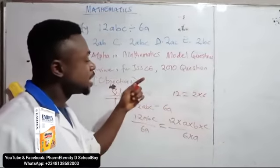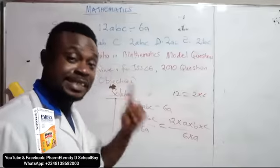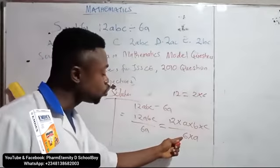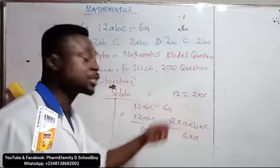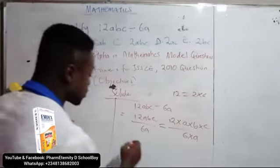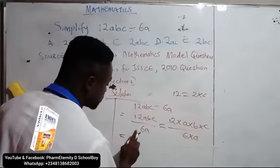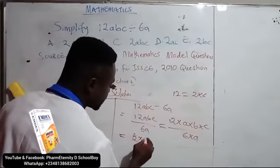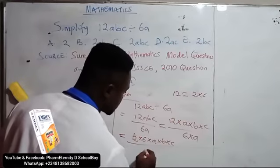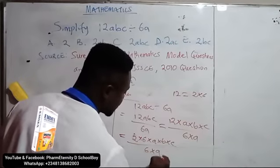So we can use 6 to cancel out that factor. So this also can be written as 2 times 6 times A times B times C over 6 times A.